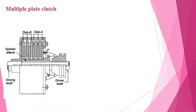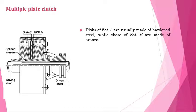Coming to the second type of clutch in the friction clutch category, that is the multi-plate clutch. As the name suggests, here there will be multiple numbers of plates — more than one. Let's see the working of the multiple plate clutch. Here there will be two types, or two sets, of plates or discs.